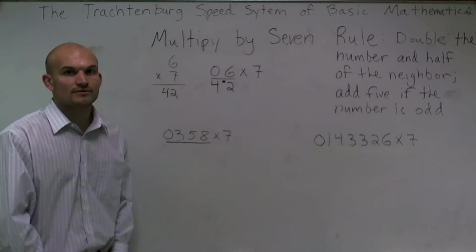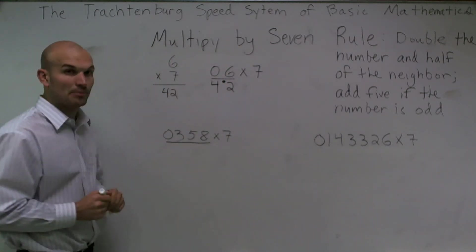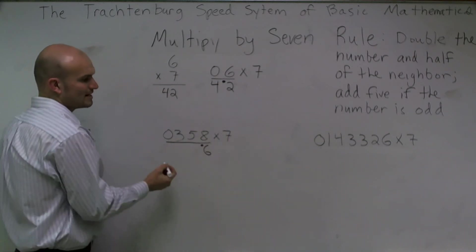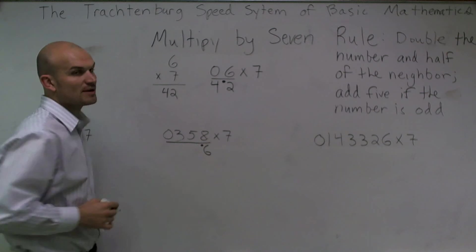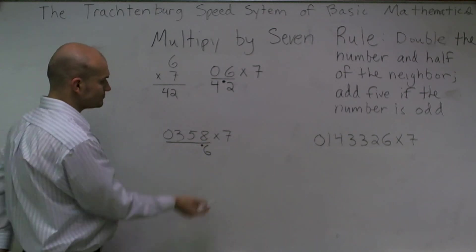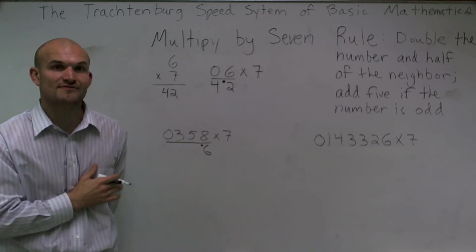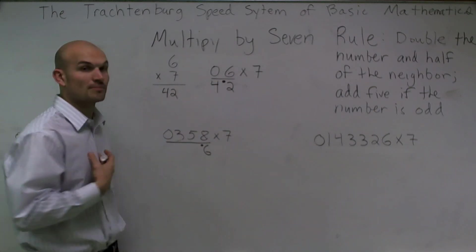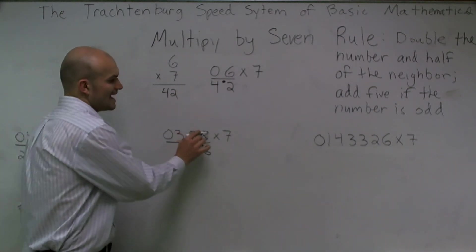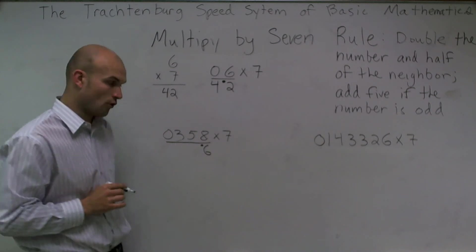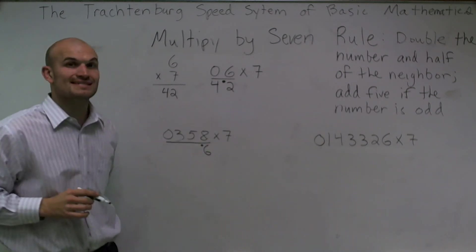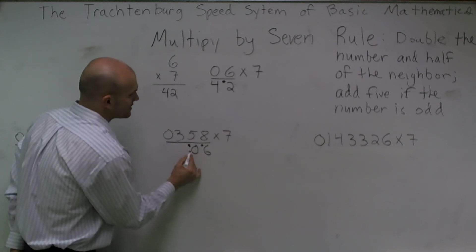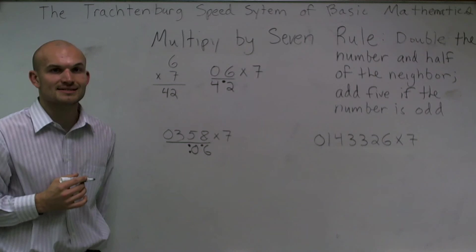So I look at 8 first. I double it, which gives me 16. I can't add it to a neighbor because there is none, but I make my dot to carry the 1. Then I take 5 — I notice 5 is odd, so I'm going to double it and then add another 5, which leaves me with 15. Add half of my neighbor 8, which is 4. So 15 plus 4 is 19, plus the carry of 1 is 20. So I write 0, and when you carry two, we put two dots.